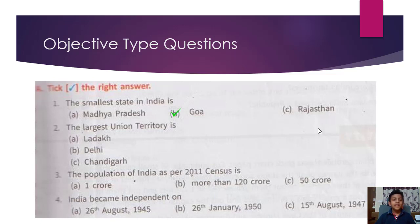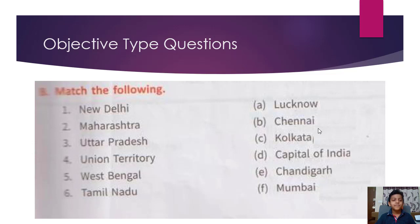The smallest state in India is Goa. The largest union territory is Ladakh. The population of India as per the 2011 census is more than 120 crore. India became independent on 15th August 1947.